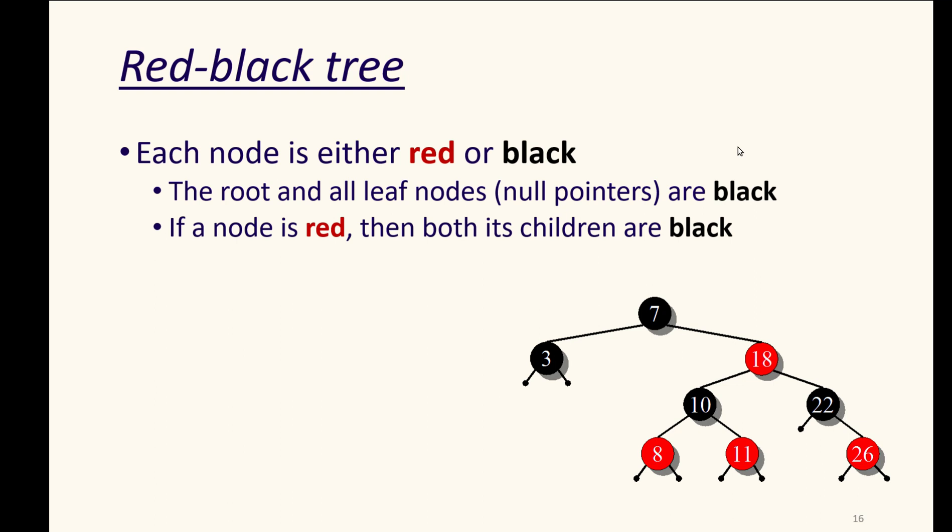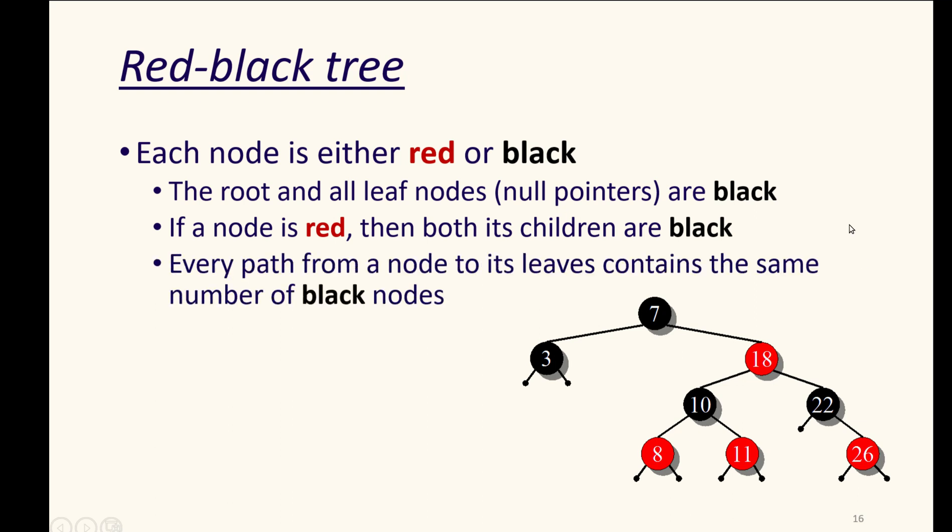If a node is red, then both its children must be marked black. Every path from a node to its leaves must contain the same number of black nodes.